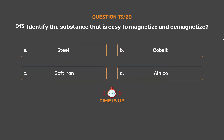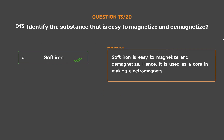The correct answer is Option C: Soft iron. Soft iron is easy to magnetize and demagnetize. Hence, it is used as a core in making electromagnets.